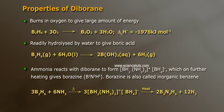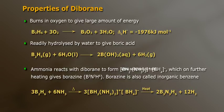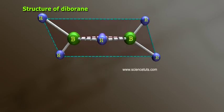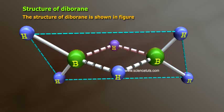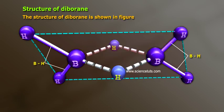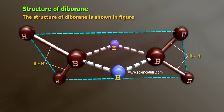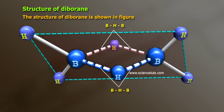Ammonia reacts with diborane to form [BH2(NH3)2]+ and [BH4]−, which on further heating gives boraxine, B3N3H6. Boraxine is also called inorganic benzene. The structure of diborane is shown in figure: four terminal B–H bonds are regular two-centre, two-electron bonds, while two bridge B–H–B bonds are three-centre, two-electron bonds.